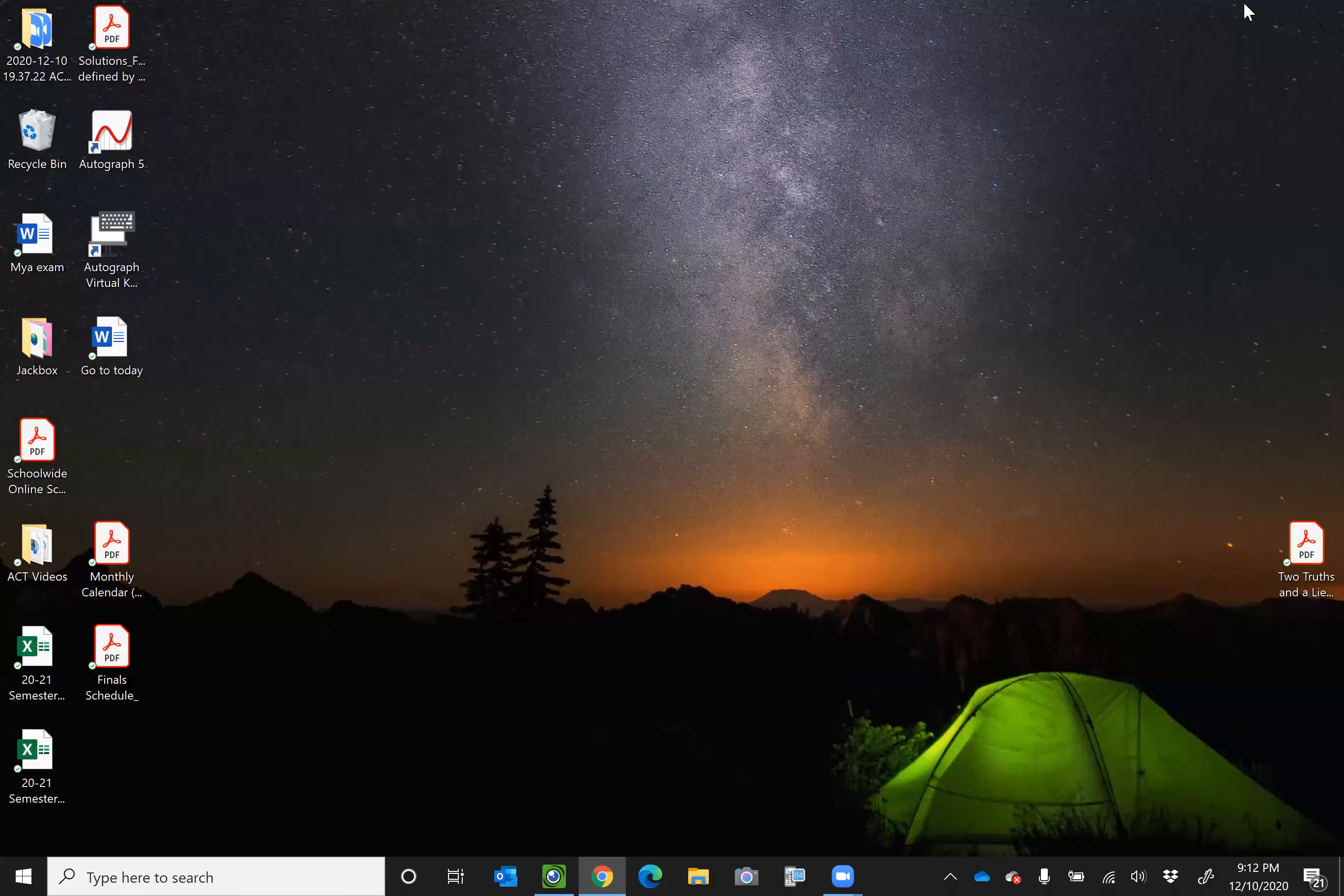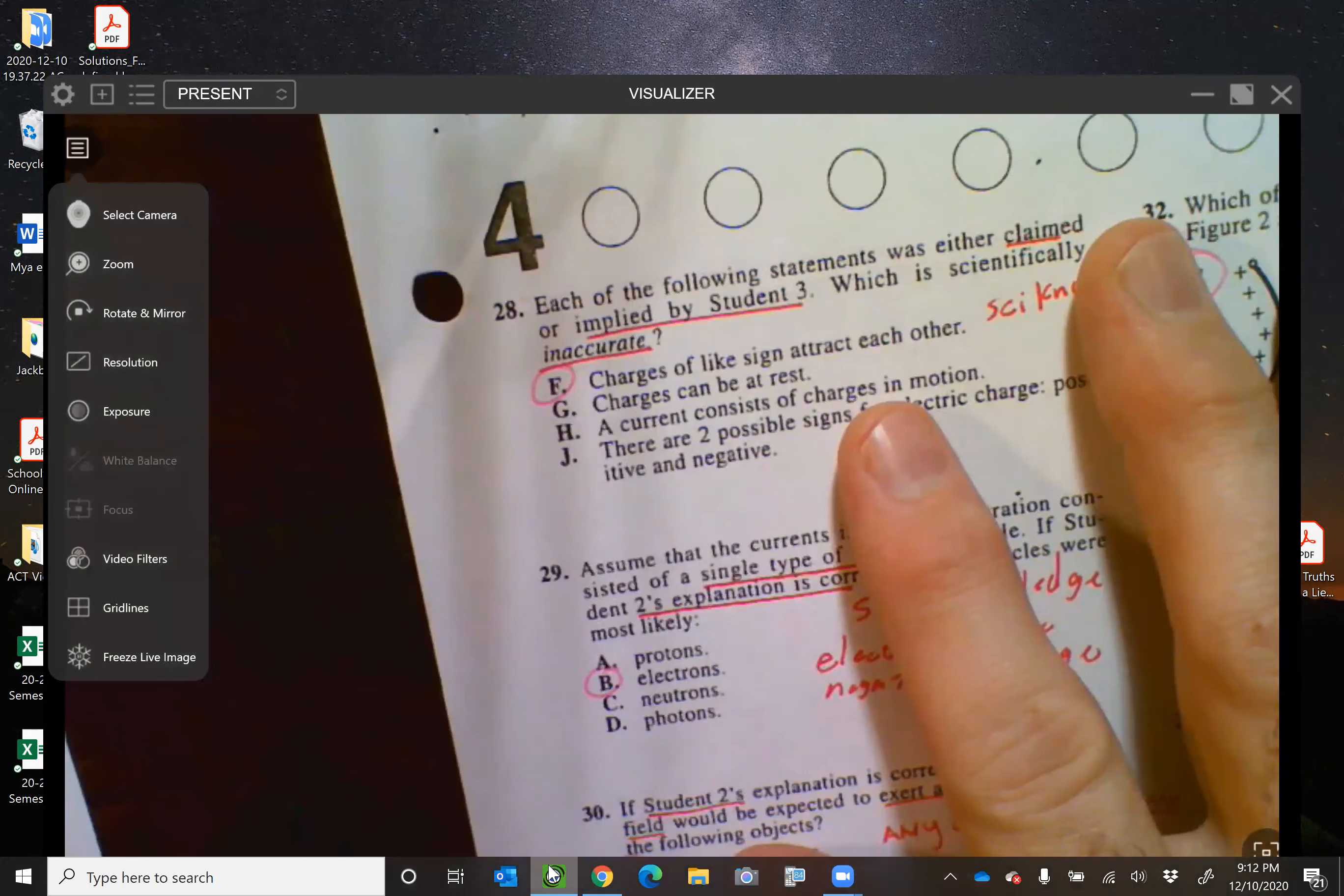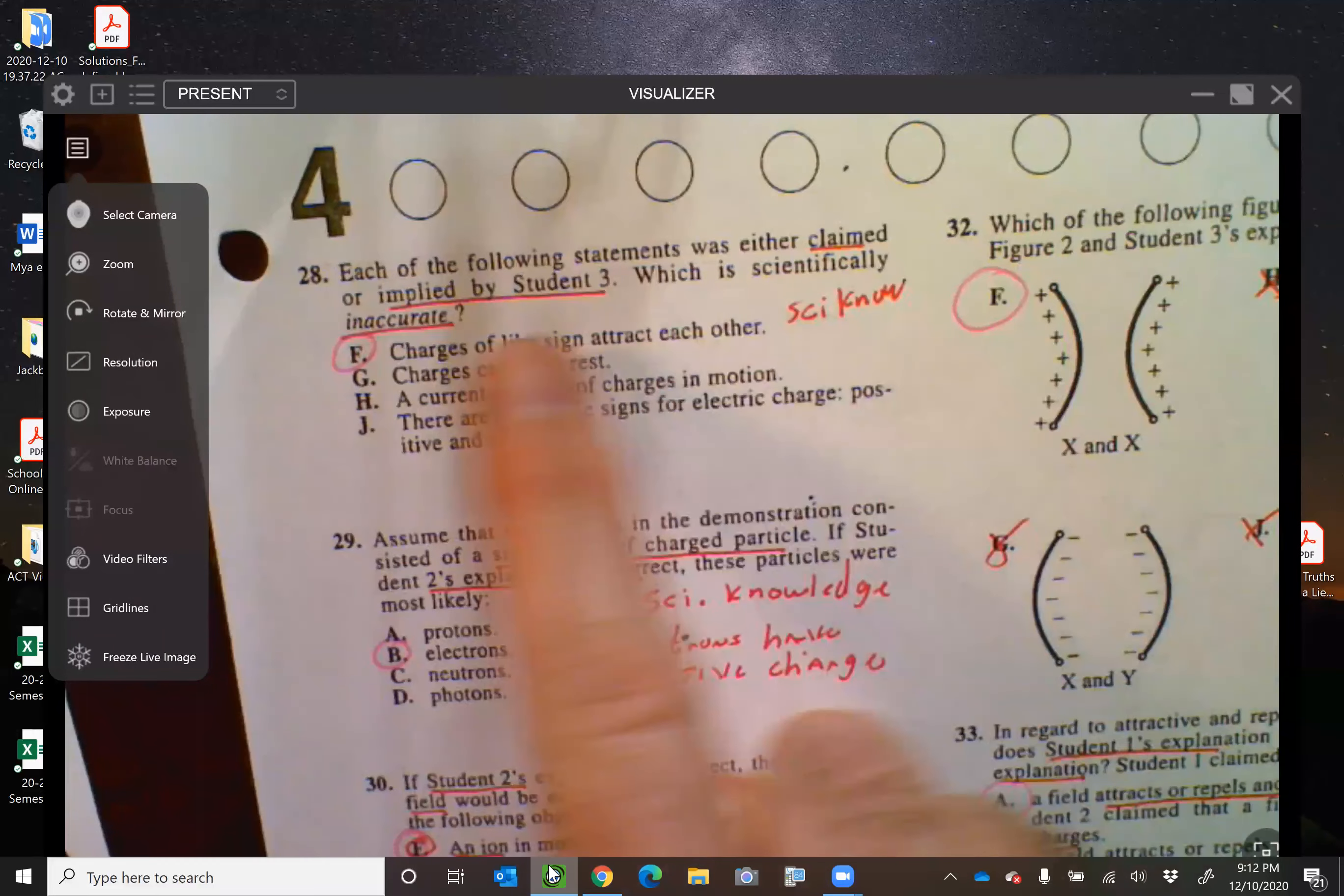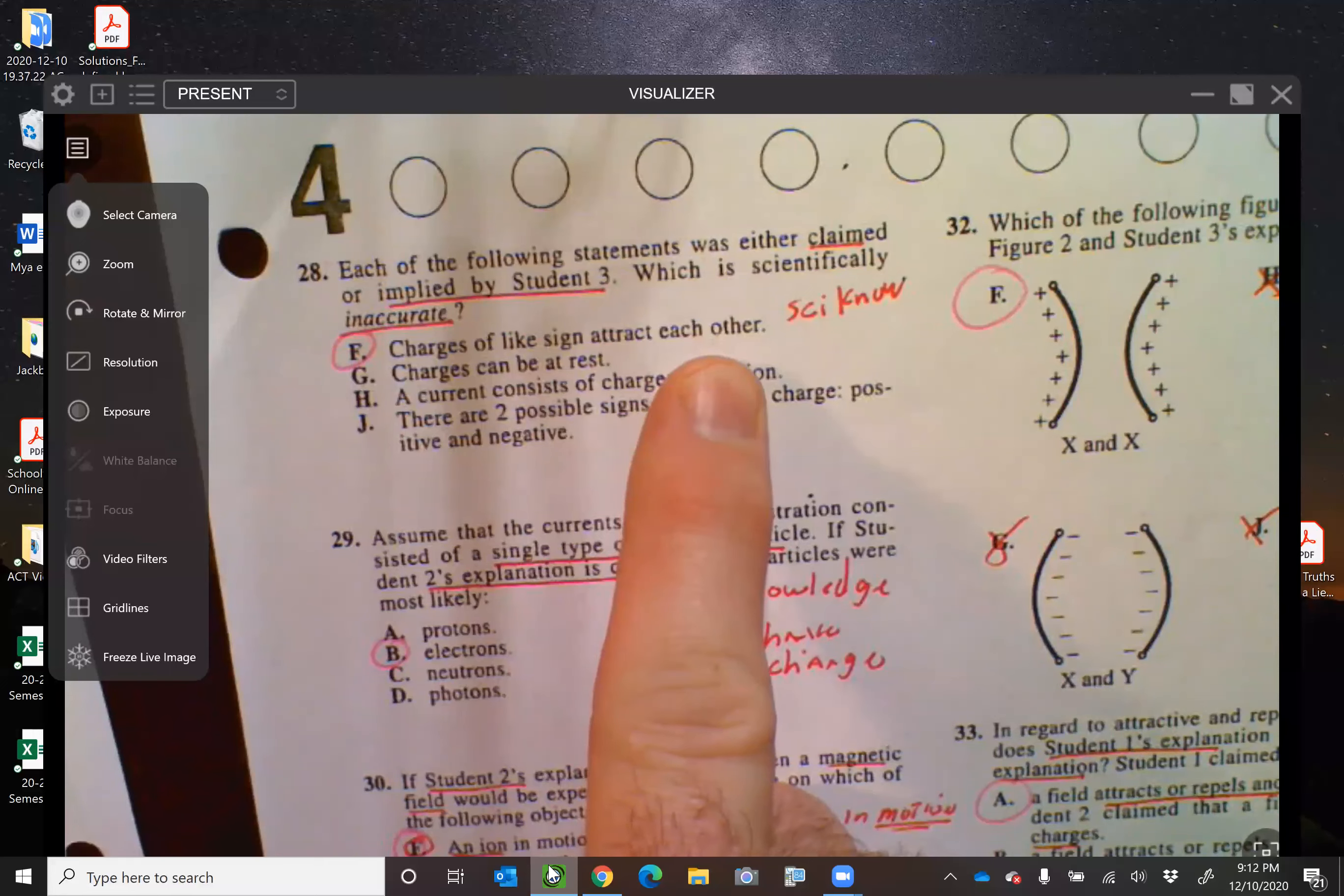Okay, so let's talk about this passage number five, the dueling scientist. Number 28 is the first one, which of the following statements was either claimed or implied by student three is scientifically inaccurate. So be careful on that.